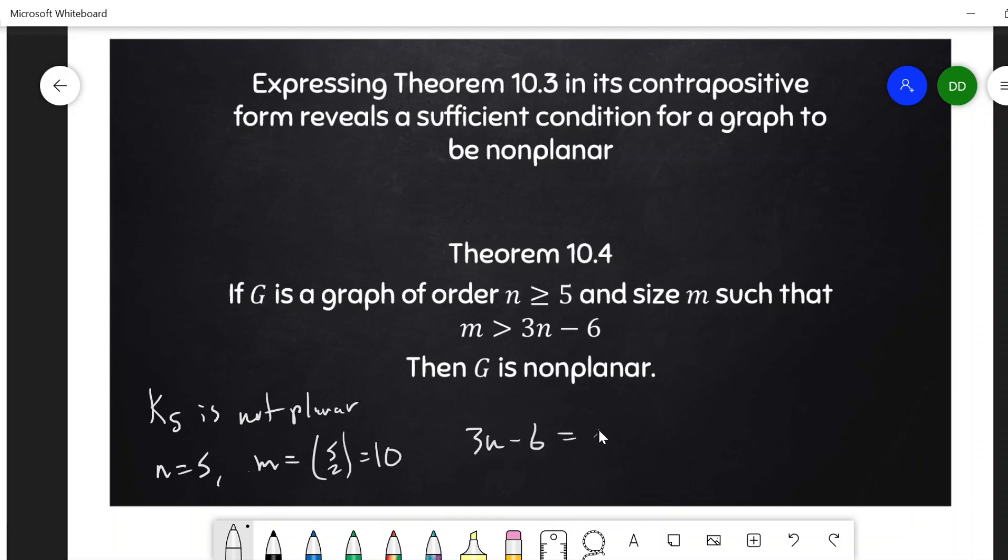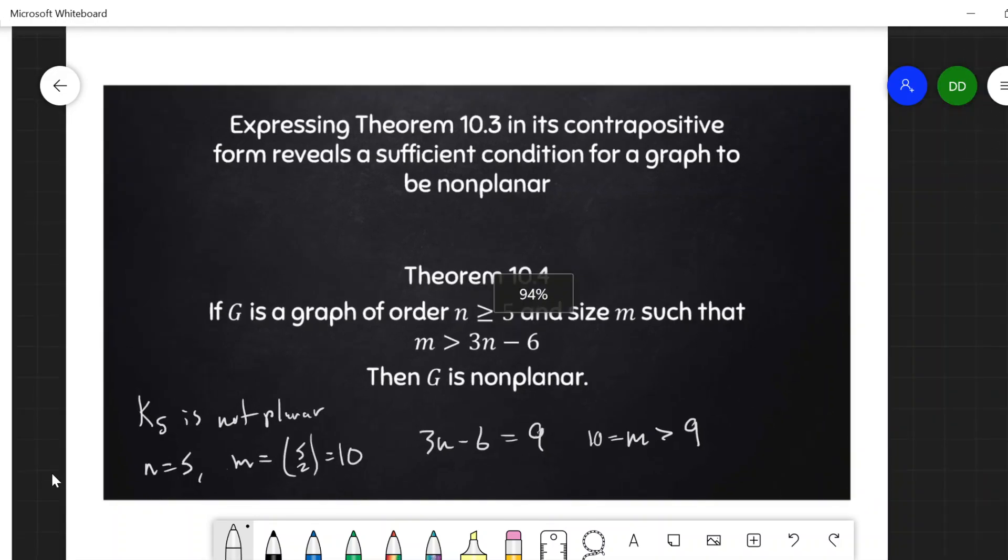And here we have m is greater than 9, the 3n minus 6. And so k5 is not planar. Simply too many edges.